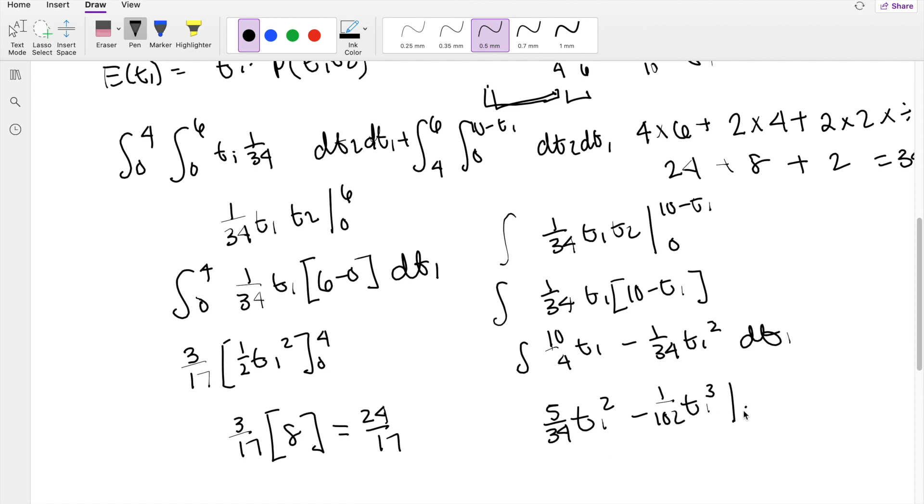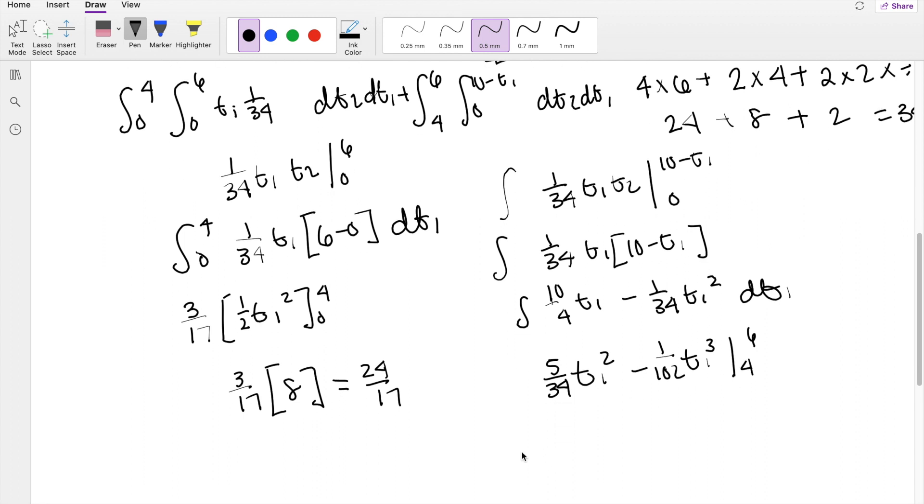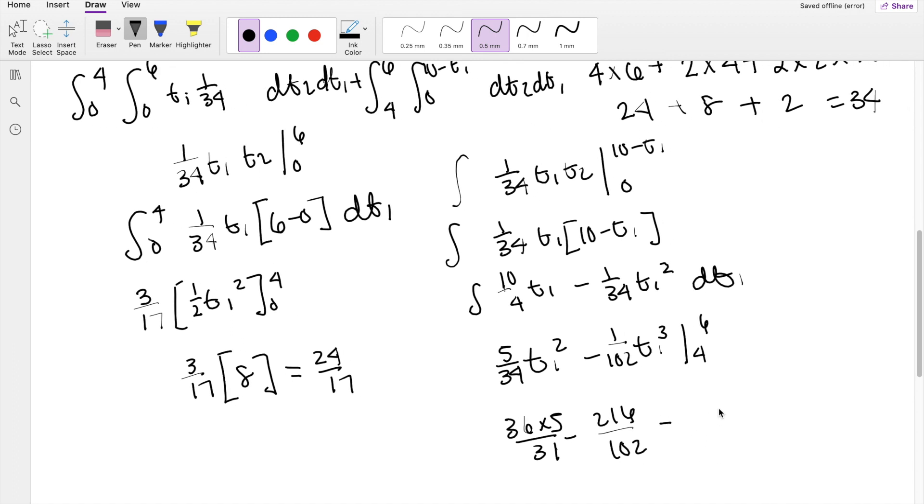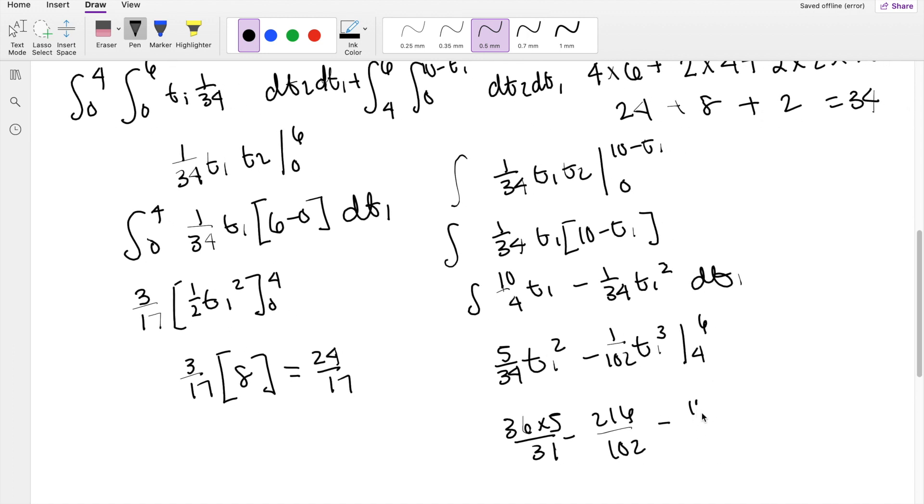Evaluating from 4 to 6. So plugging in the upper limit, you get 36 times 5 divided by 34 minus 6 cubed, which is equal to 216 over 102 minus 4 squared, that's 16. 16 times 5 divided by 34 plus 4 cubed, which is 64 divided by 102. Plugging this into the calculator.